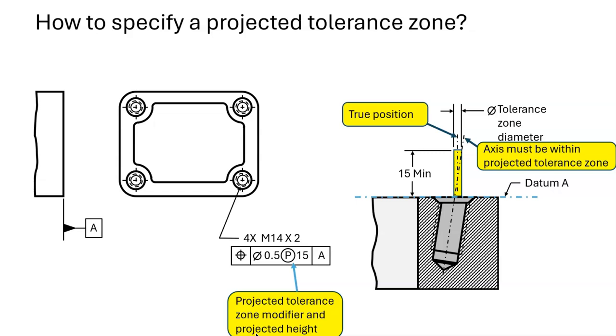As a rule of thumb, it generally becomes worthwhile to use a projected tolerance zone when the height of the mating part is at least as tall as the distance that the bolt threads extend into the part.